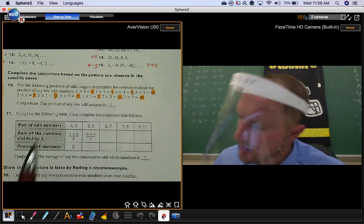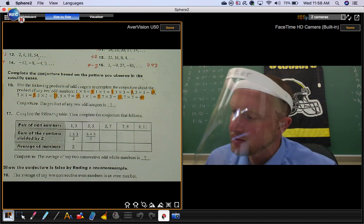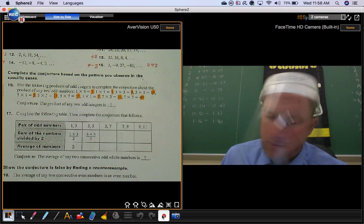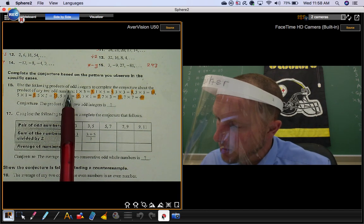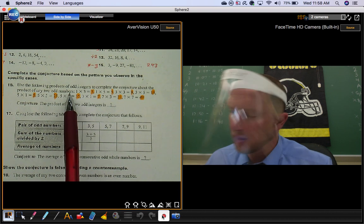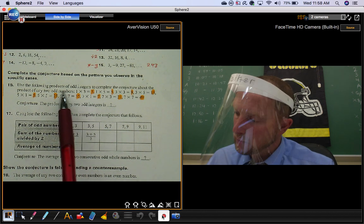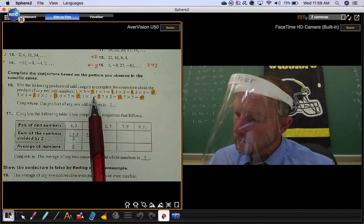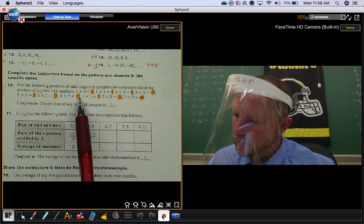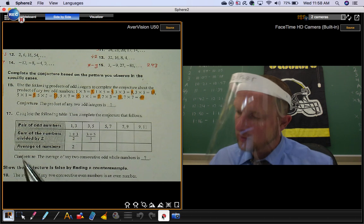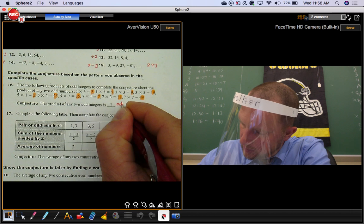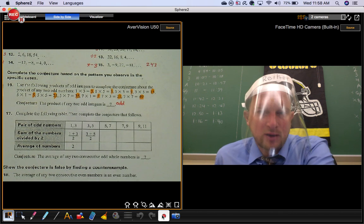Number 16 and 17, they ask you to complete the conjecture based on the pattern you observe in the specific cases. So use the following products of odd integers to complete the conjecture about the product of any two odd numbers. Product means multiply. So you're multiplying two odd numbers, and notice what you end up with. The product of any two odd integers is an odd number.